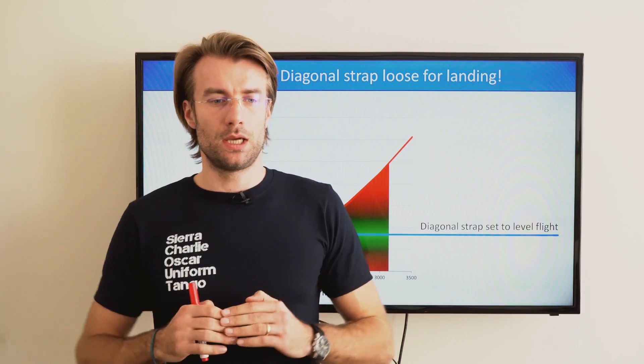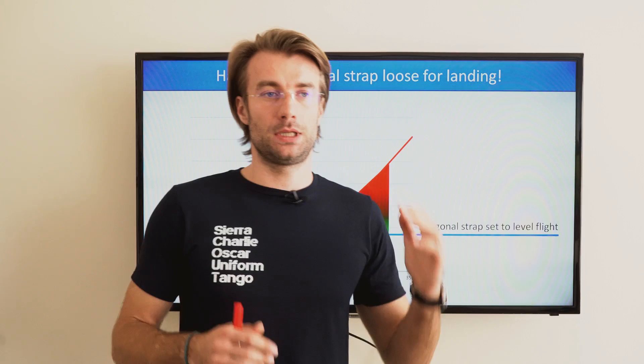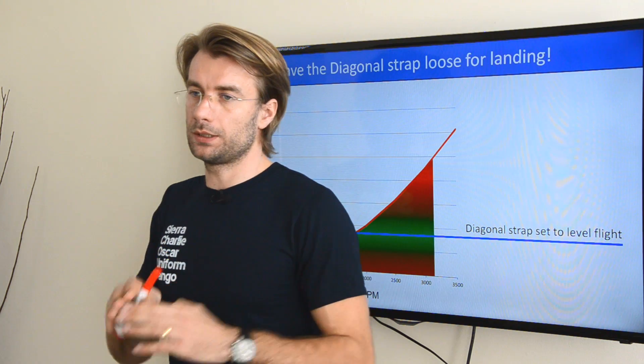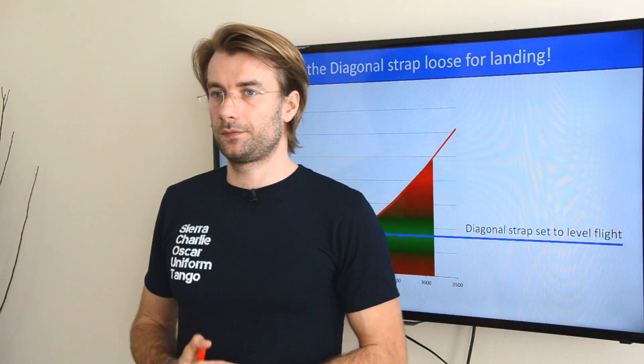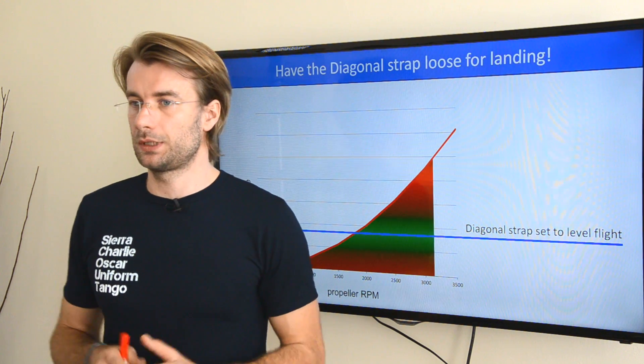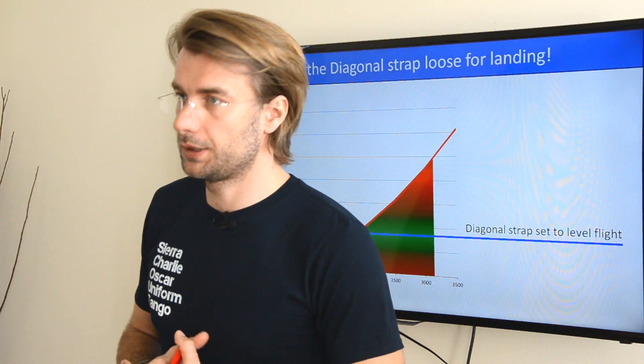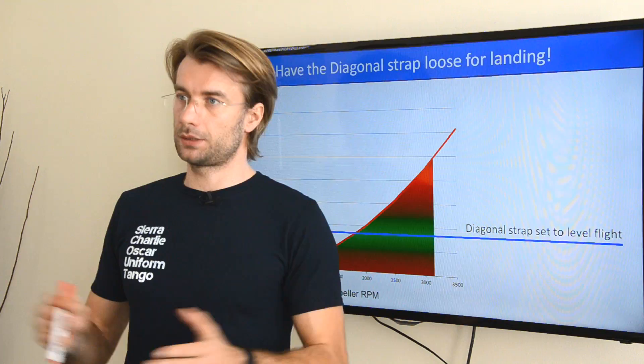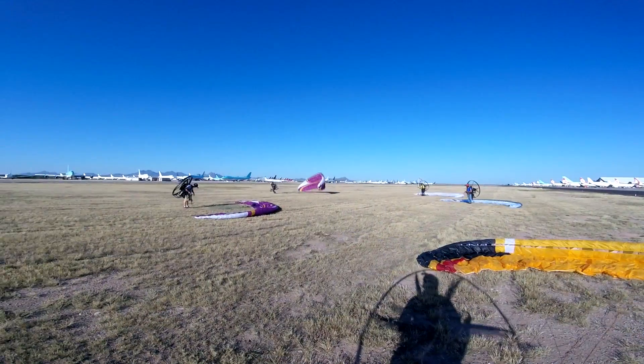So I had zero torque to the right and a lot of weight shifting due to the diagonal strap to the left. And right before landing the glider took me to the left and I almost crashed into the vineyard. Luckily I was safe. I just damaged my glider. I learned from this lesson. Please do the same and please don't forget to disconnect your diagonal strap before landing.